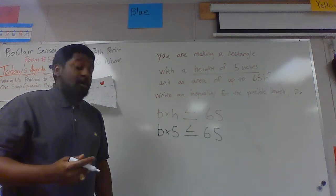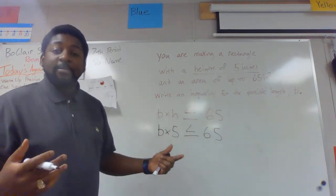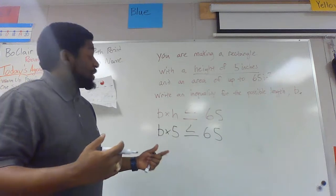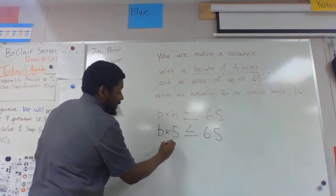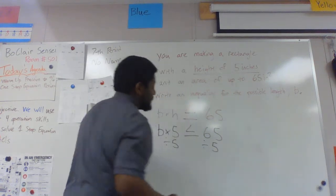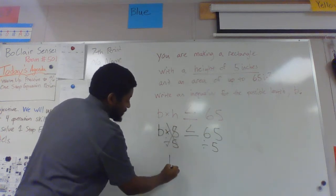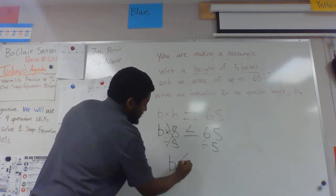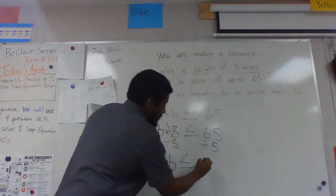This inequality would actually help you find out what your possible values could be, but to solve it we have to do the opposite operation of times 5 which is to divide by 5 on both sides. On this side they cancel, I get just my b, same sign, 65 divided by 5 is actually 13.